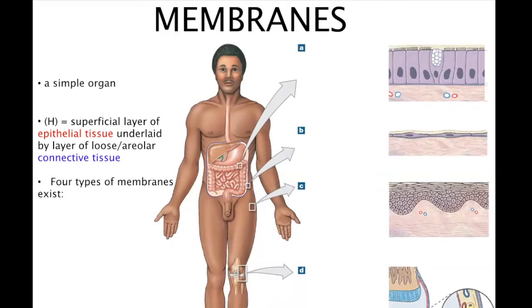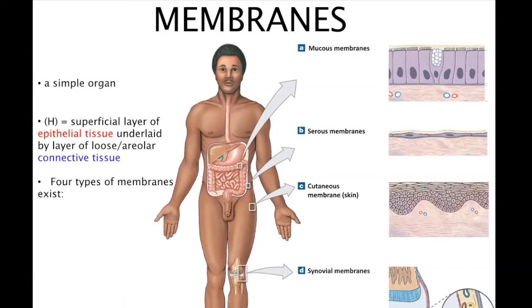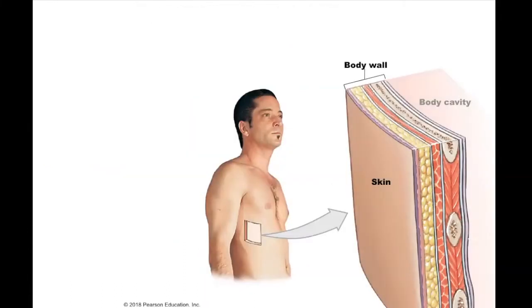The structure, or histology in this case, is a superficial layer of epithelial tissue underlied by a layer of loose connective tissue. There are four types of these body membranes that will be on the exam: mucus membranes, serous membranes, cutaneous, and synovial. This right here is what's lining the outside of your body — the epithelial and loose connective tissue that forms the cutaneous membrane.